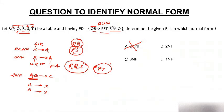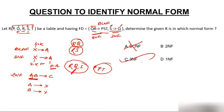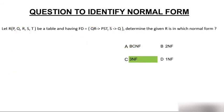Let's check for 3NF. For QR to PST — since it's in BCNF, it's 100% in 3NF. For S to Q: is S a super key? No. But 3NF says A should be a prime attribute — is Q a prime attribute? Yes, Q is a prime attribute. So S to Q is in 3NF. All functional dependencies satisfy 3NF, so the table is in 3NF.